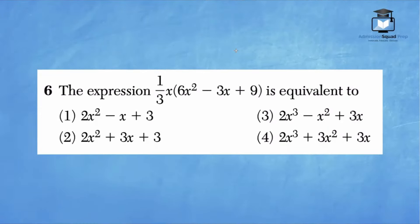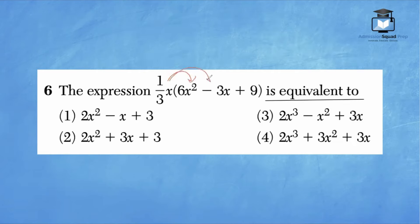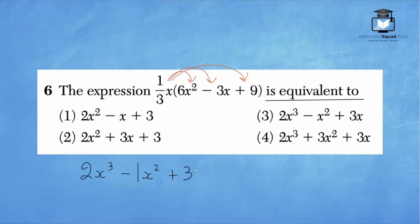Number 6: the expression one-third x times (6x² minus 3x plus 9) is equivalent to. We need to apply the distributive property. One-third times 6 is 2, and x times x² is x³, giving 2x³. One-third times negative 3 is negative 1, and x times x is x², giving negative x². One-third times 9 is 3, giving 3x. So we have 2x³ minus x² plus 3x. The correct answer is choice 3.